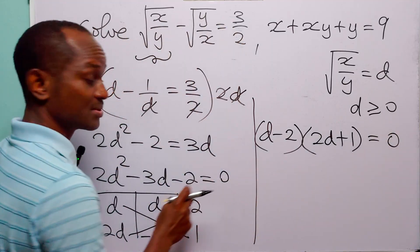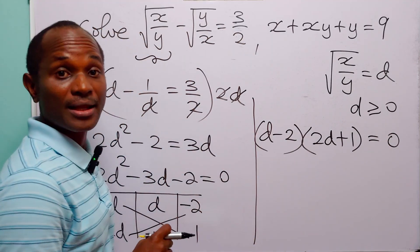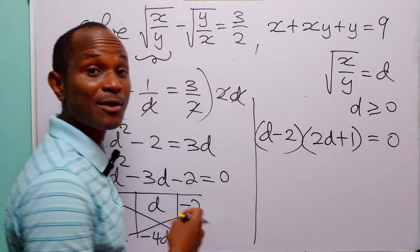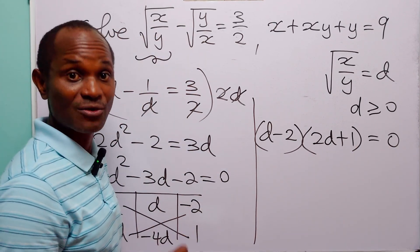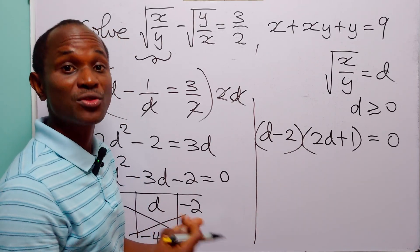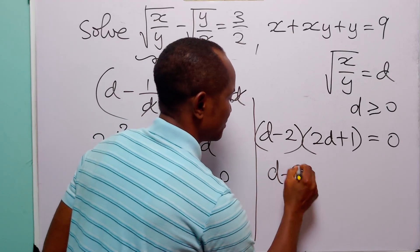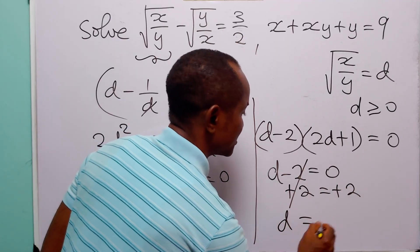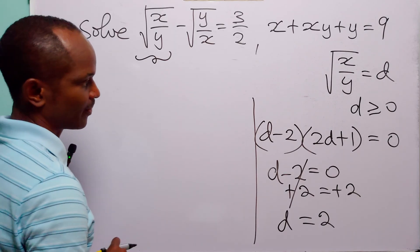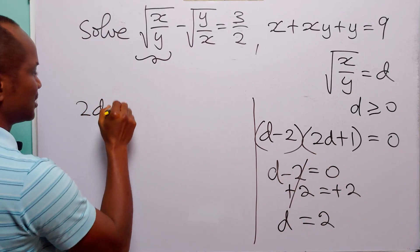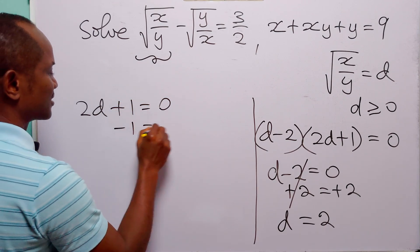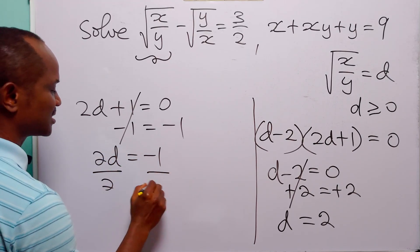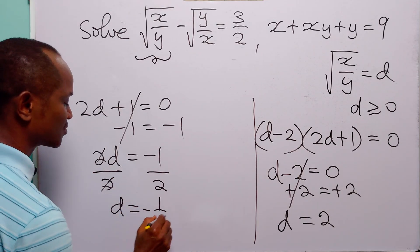This is equal to zero. This equation means that either d minus 2 is equal to 0, or 2d plus 1 is equal to 0, because when the product of two items is 0, either one or both of them must be 0. From d minus 2 equals 0, adding 2 to both sides gives d equals 2. From 2d plus 1 equals 0, subtracting 1 gives 2d equals minus 1, and dividing by 2 gives d equals minus 1 over 2.